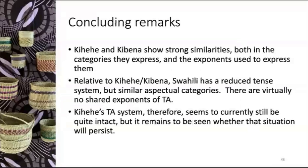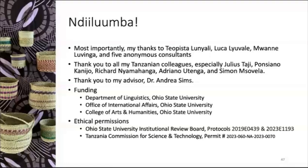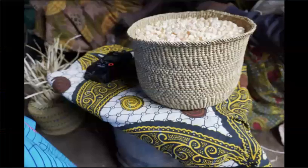To wrap up: Kihehe and Kibena show strong similarities both in the categories they express and the exponents used to express them — not phenomenally surprising given how closely related they are. Relative to Kihehe and Kibena, Swahili has a reduced tense system but similar aspectual categories. There are virtually no shared exponents of tense and aspect between Kihehe/Kibena and Swahili. Kihehe's tense-aspect system therefore seems to currently still be quite intact, but it remains to be seen whether that situation will persist. Thank you to all of the consultants who have worked with me over the years.